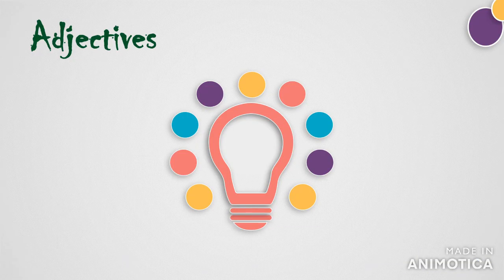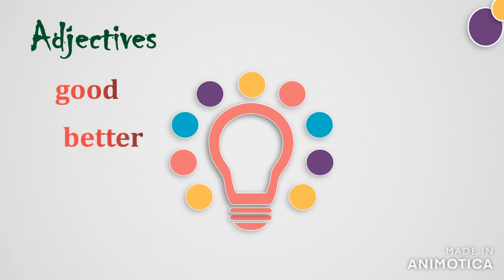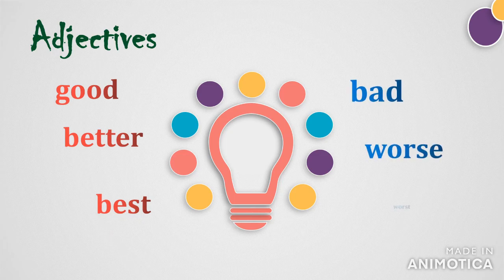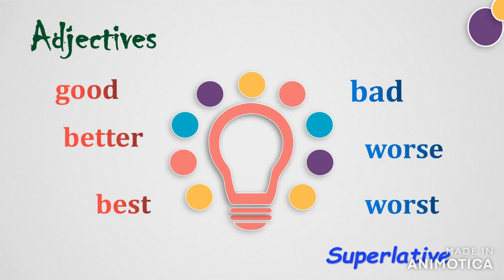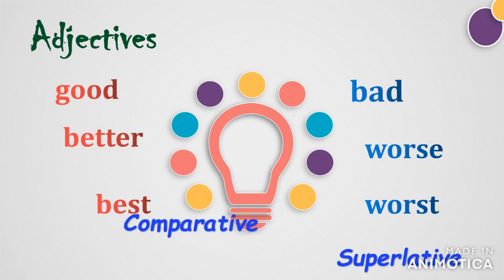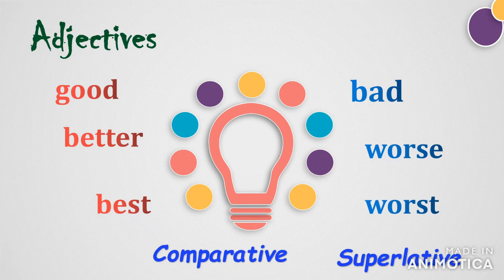There are certain adjectives which we cannot change into comparative and superlative form by adding 'er' or 'est'. These adjectives change completely during the different degrees. Here are some examples: good, better, best; bad, worse, worst. 'Best' and 'worst' are in superlative form, 'better' and 'worse' are in comparative form, whereas 'good' and 'bad' are in positive degree.